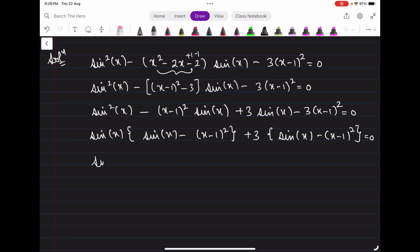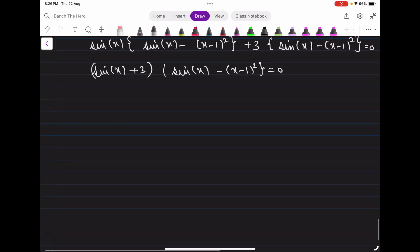So the factors are (sin(x) + 3) multiply by (sin(x) - (x - 1)²). Product of two things equals 0, it means either the first term is 0, that is sin(x) = -3, which is not possible since sin(x) ranges between -1 to 1. So sin(x) cannot attain value -3. This case is rejected.